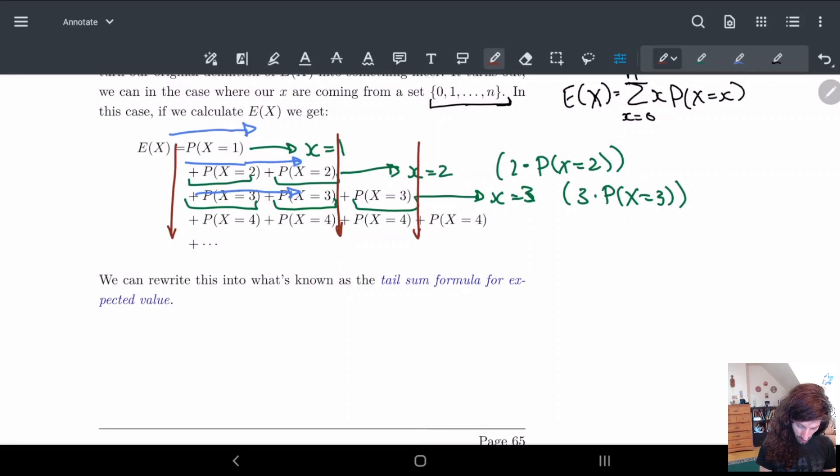What we have is this first term is P(X ≥ 1). That's just summing everything up from 1 to n. And then we have X ≥ 2 is the next line, because we start off on the second part.